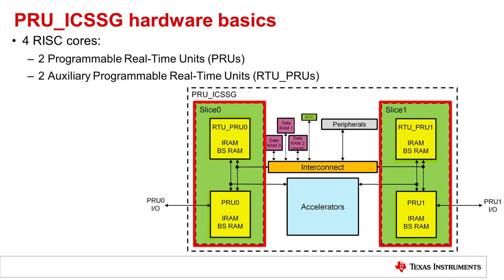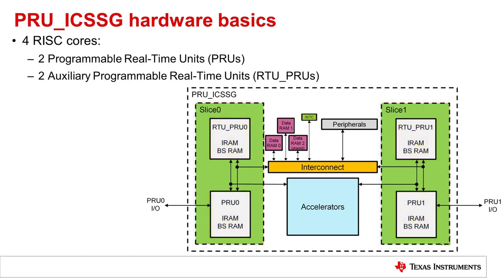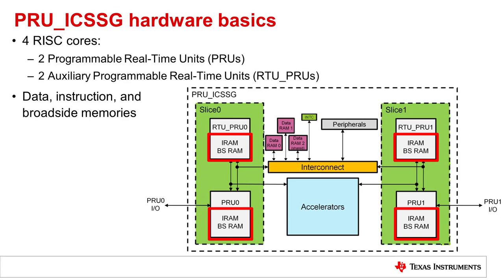One thing to note is that the content of each slice can only be accessed by the RTU and/or PRU cores in that slice, while the content shown outside of the two slices is accessible by any core. The PRU-ICSS-G also offers a number of different memory types. Each PRU or RTU core has dedicated instruction and broadside RAM. The subsystem also contains data RAM 0 and 1 and shared RAM. The size of these memories varies between devices; however, data RAM 0 is typically used by PRU 0 and RTU 0, while data RAM 1 is typically used by PRU 1 and RTU 1. The shared RAM is accessible to all PRU and RTU cores.